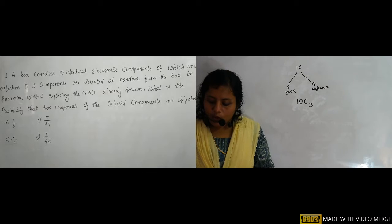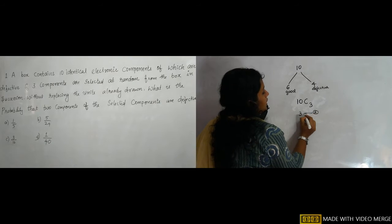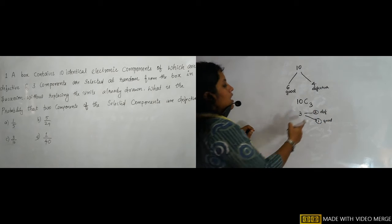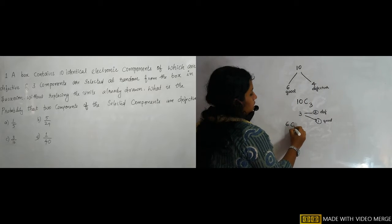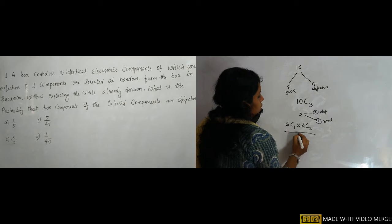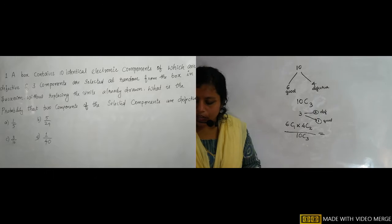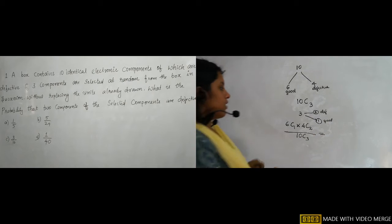We need two defective and one good out of the three drawn. So: one good from six good is 6C1, and two defective from four is 4C2, divided by total 10C3. Solving this gives the answer 3/10.